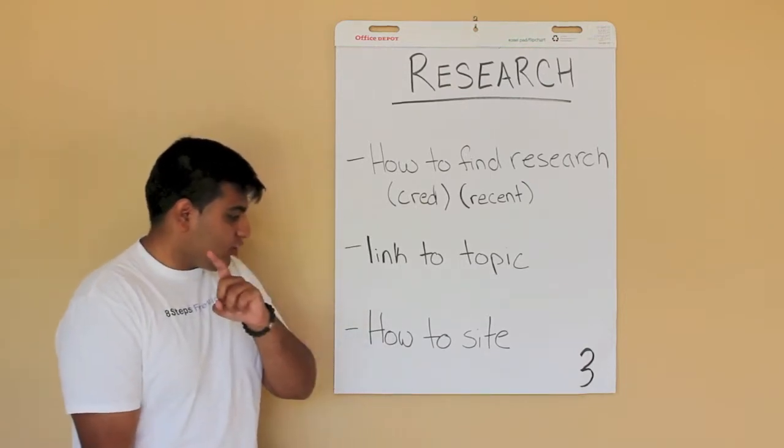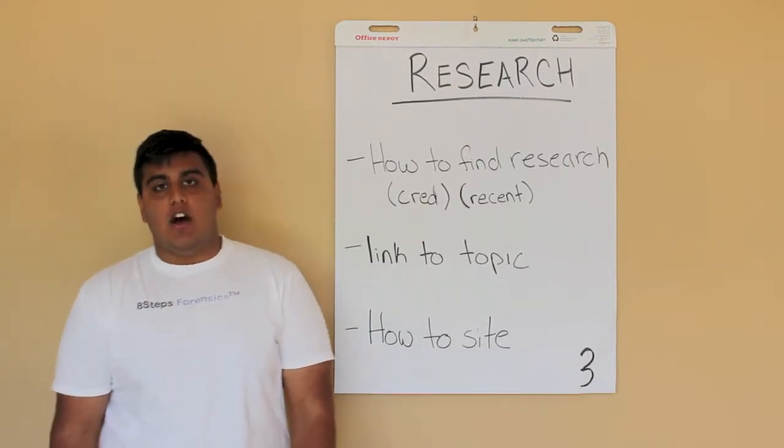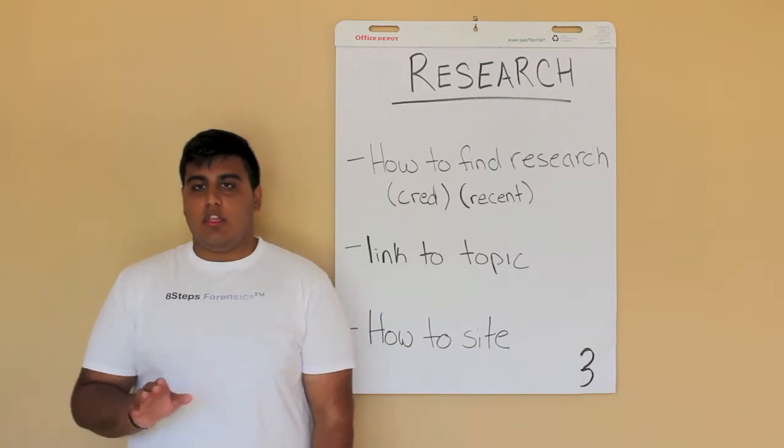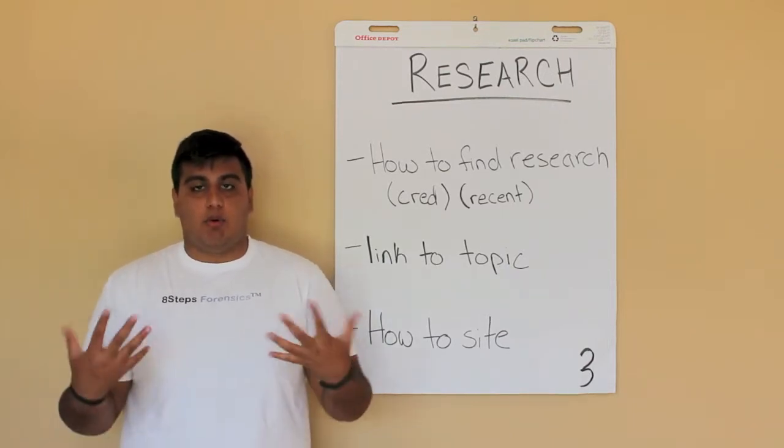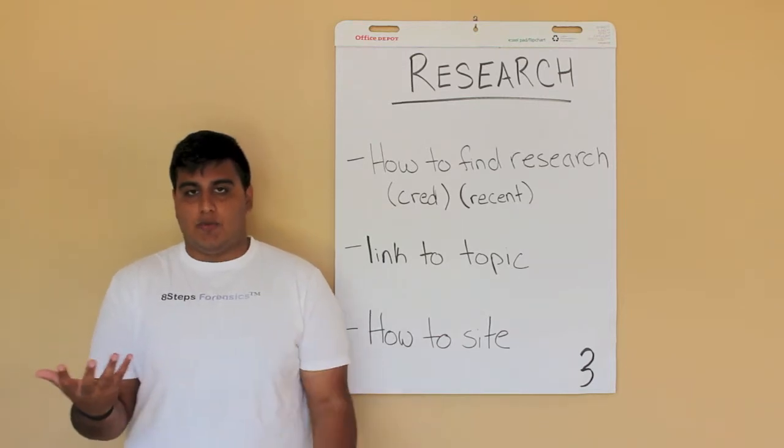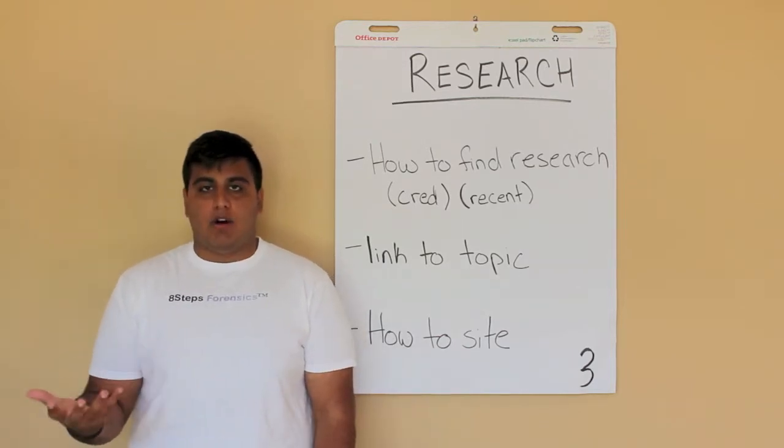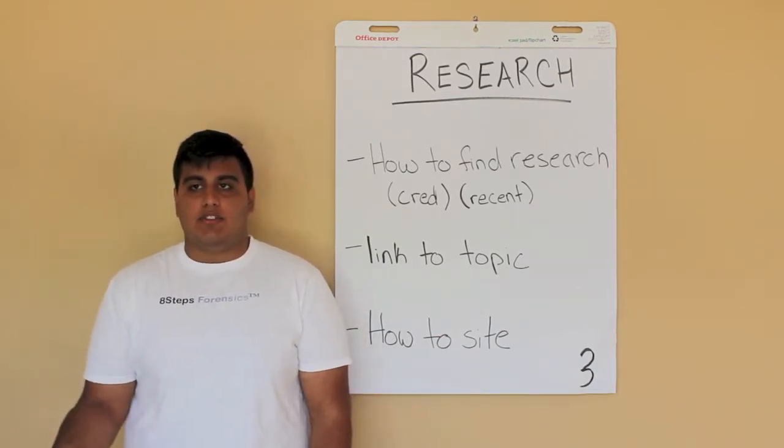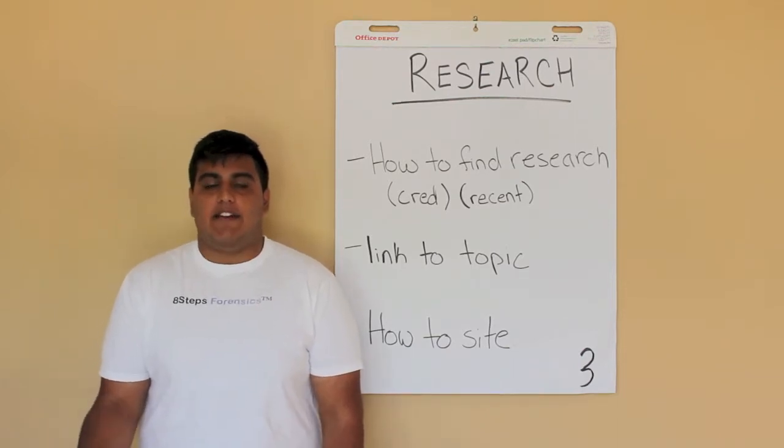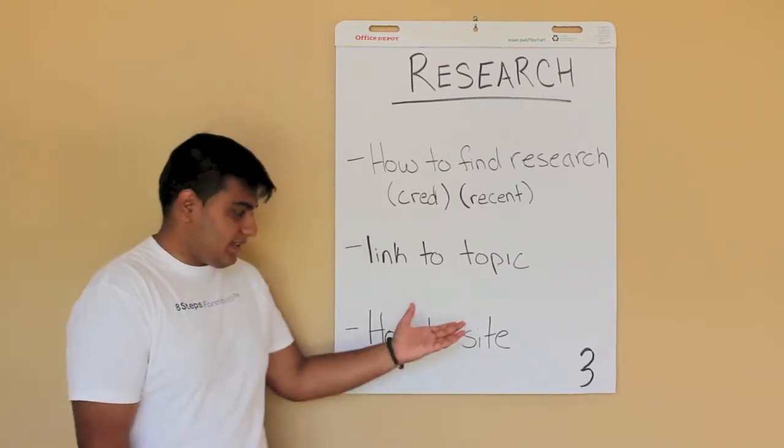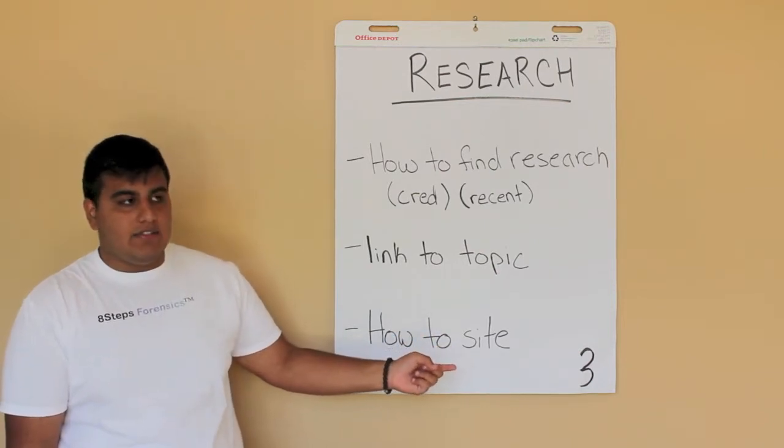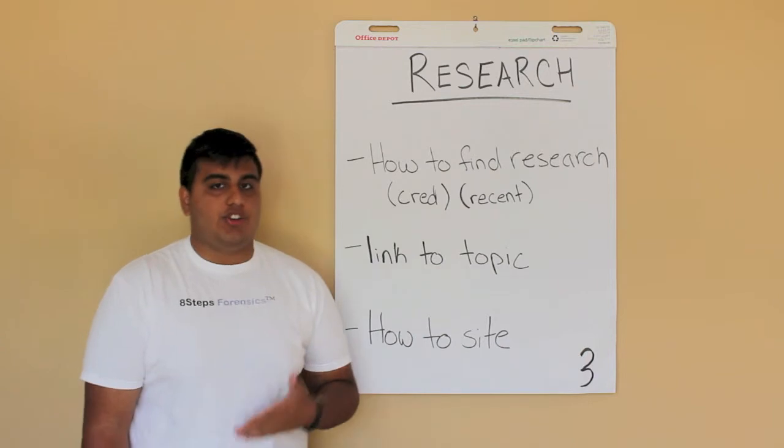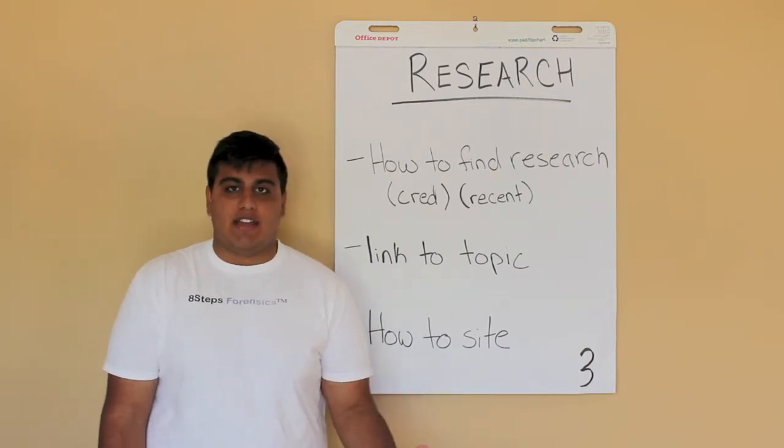And that leads me into how to properly cite. A lot of times people just throw in research in the middle of a paragraph because they think it supports what they have to say, when in reality I can talk about Martin Luther King and randomly cite the day he died and have absolutely no correlation to what I'm saying. How to cite is very important because it gives you an opportunity to set up and have the judge and the audience better understand what you have to say.